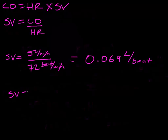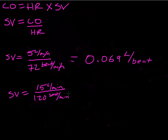After she sees Romeo, her cardiac output jumped up to 15 liters per minute and her heart rate was 120 beats per minute. That works out to 0.125 liters per beat. All right, so let's move on over to our problem set and look at the next problem.